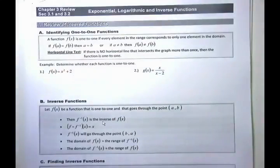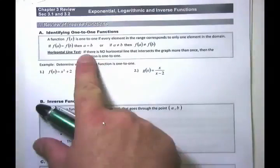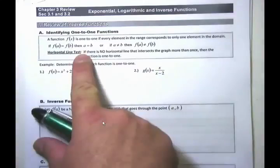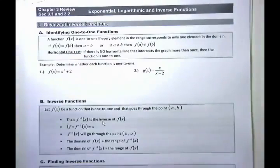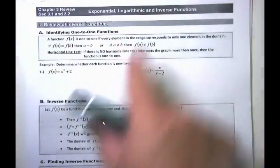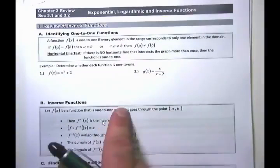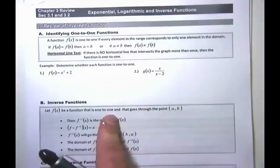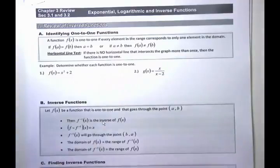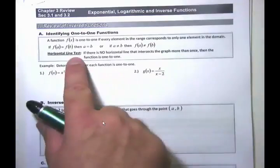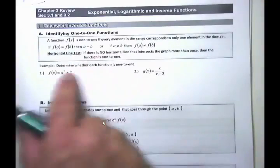The way we used to check this in high school was with a special test called the horizontal line test. Remind yourself — there were two different line tests from high school algebra. There was the vertical line test, which tells you if something is a function. A vertical line goes up and down, and if it passes through the graph only once, it is a function. If it passes through more than once, it was not a function.